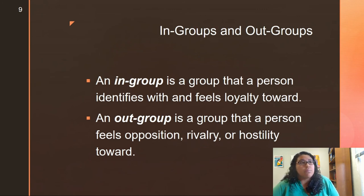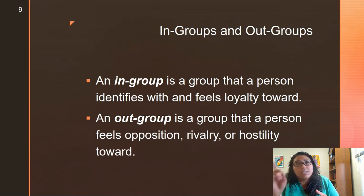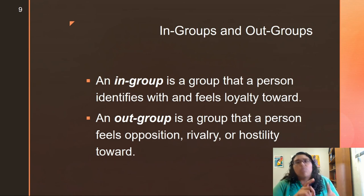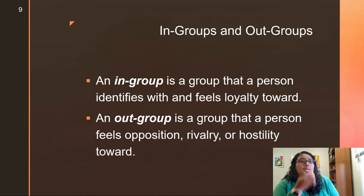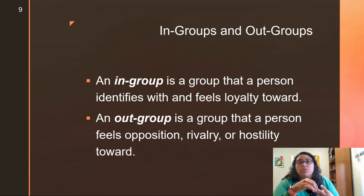Different types of groups: a dyad has two members and is the smallest type of group. It's the most unstable because if one person leaves, it's no longer a group. Then you have a triad, a three-person group, which is more stable than a dyad. If there's a conflict between two people, the third person can come in to facilitate and help the situation so it doesn't collapse into a dyad.